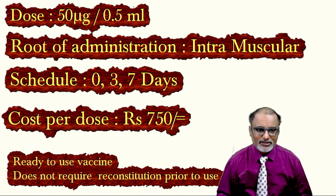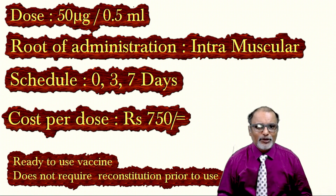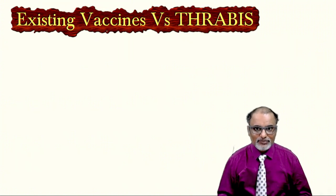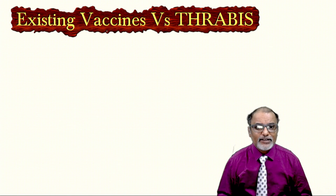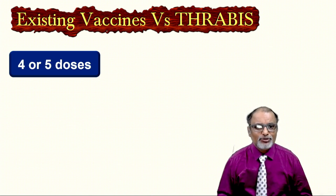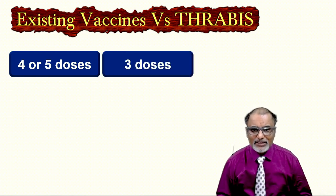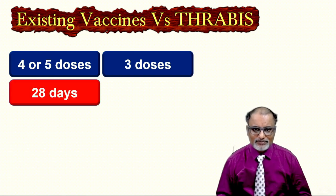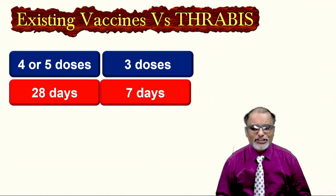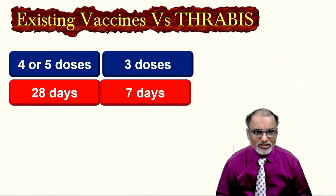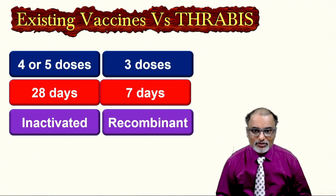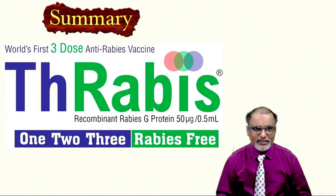Comparing with existing vaccines: existing vaccines require four or five doses. For intradermal, it is days 0, 3, 7, and 28 — four doses. For intramuscular, it is days 0, 3, 7, 14, and 28 — five doses. With this novel vaccine, only three doses are needed. The total period for existing vaccines is 28 days; here it is just seven days, so you won't miss the patient. All existing vaccines are inactivated, but this uses recombinant technology targeting G protein.